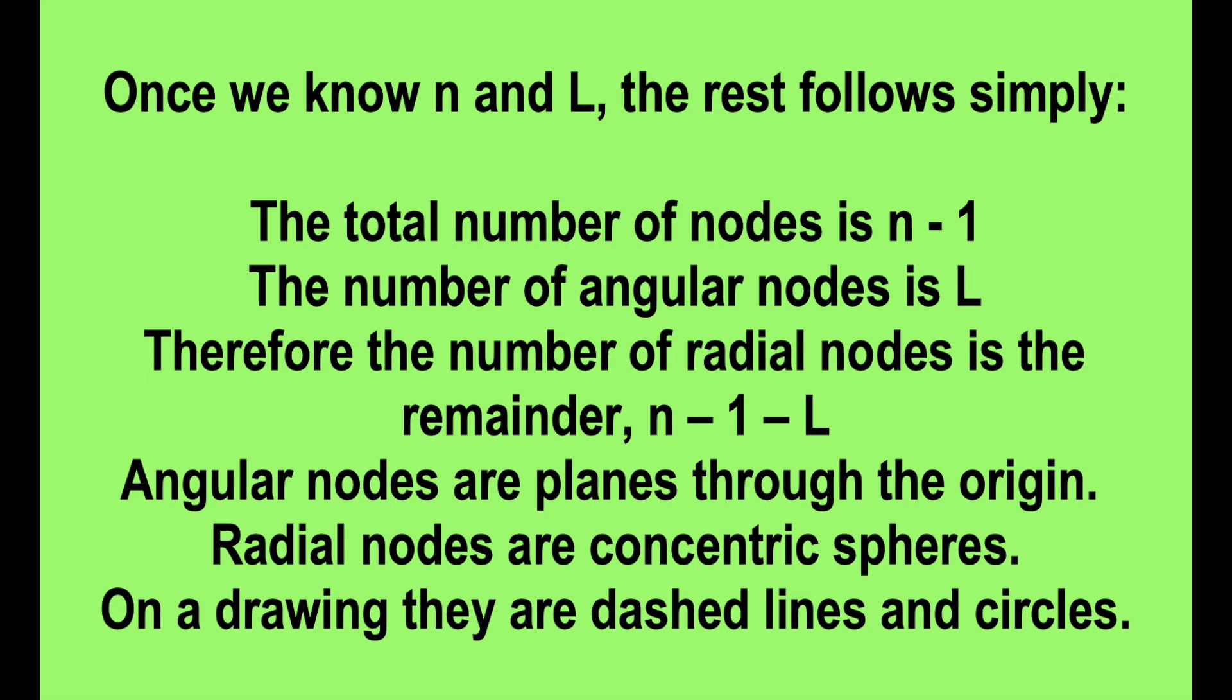Angular nodes are planes through the origin. Radial nodes are concentric spheres. On a drawing, they are dashed lines and circles.